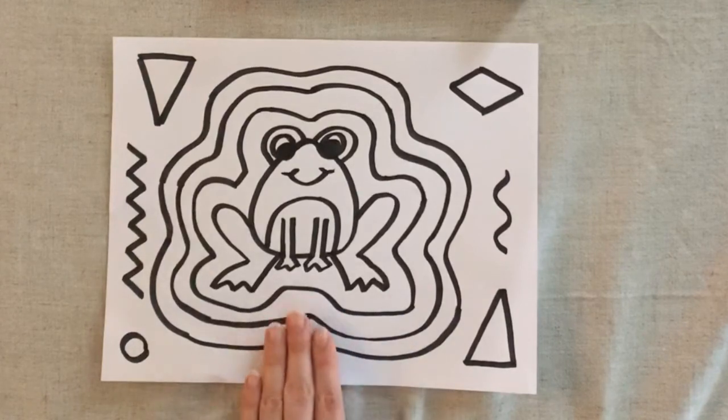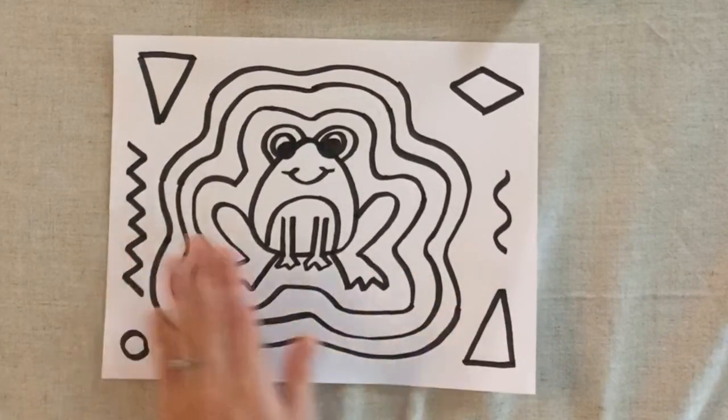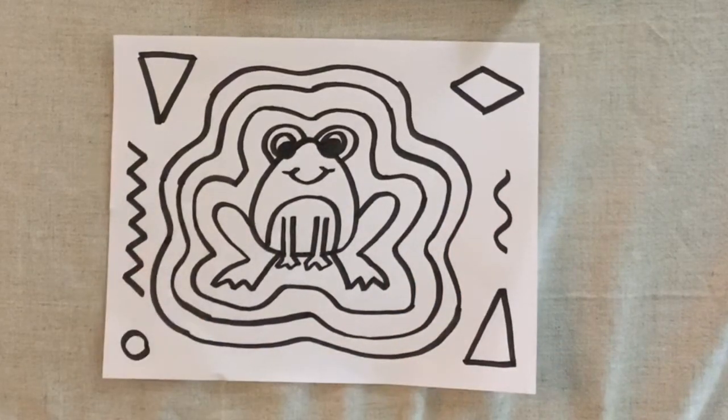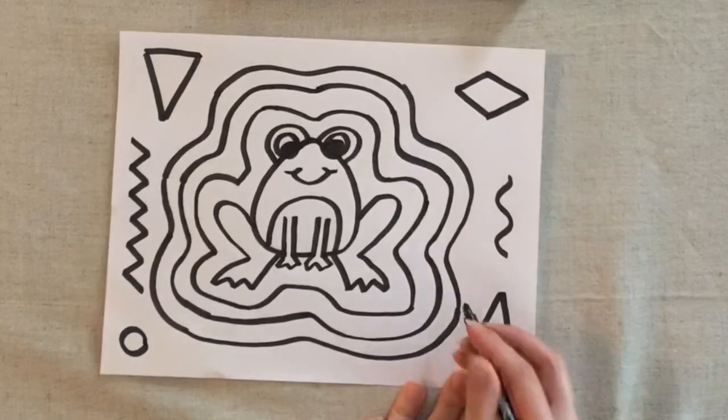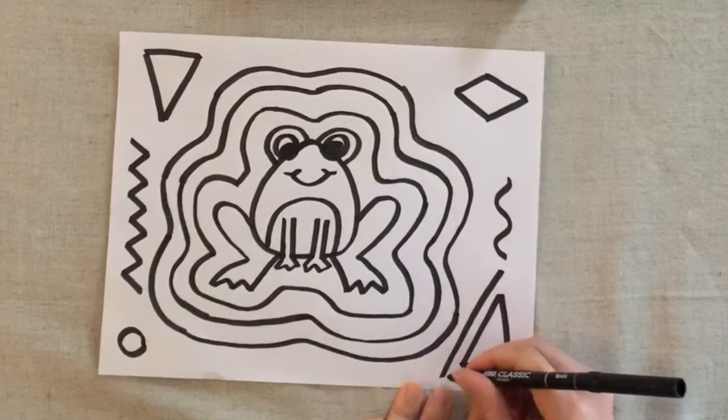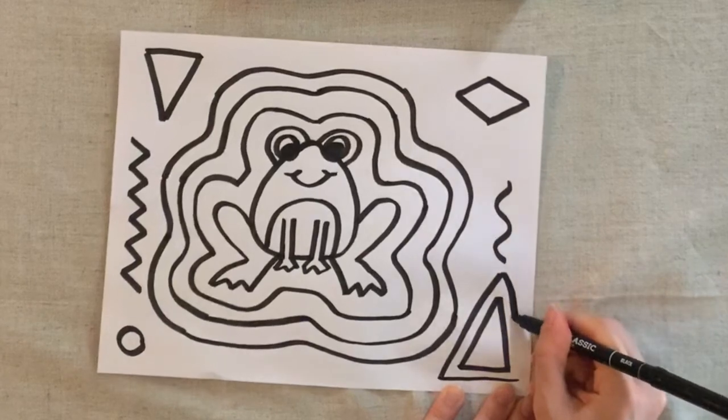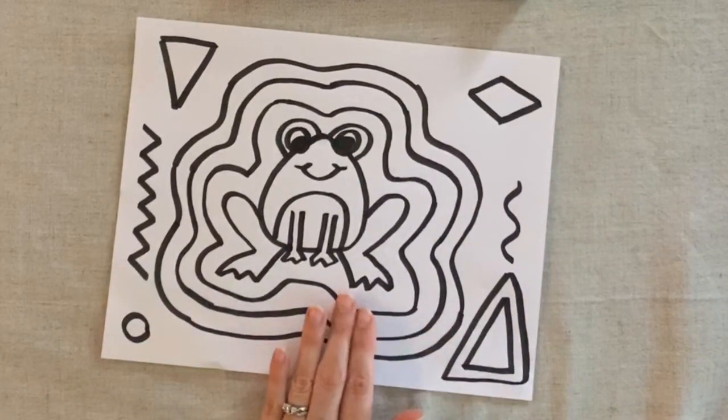Remember when we added the layers with the lines? We're going to try and do the same thing for the shapes and the designs that we just added. So I'm going to add a little bit more and I'm going to do the same thing where I'm adding an extra line around my design just like I did for the frog.